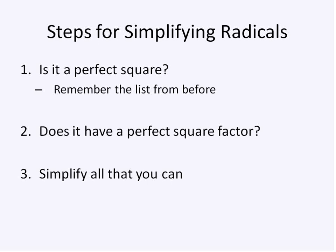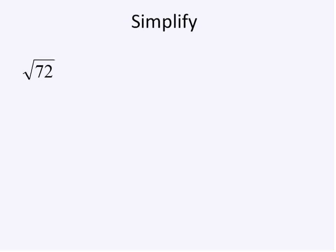So, first, is it a perfect square? Remember that list from before? You need to use that list. If it's a perfect square, just solve it. Does it have a perfect square factor? That's the second question that you're asking. So if it has a factor that's on that list of perfect squares, then we can simplify all that we possibly can. Let's look at an example.